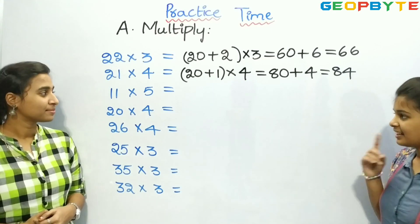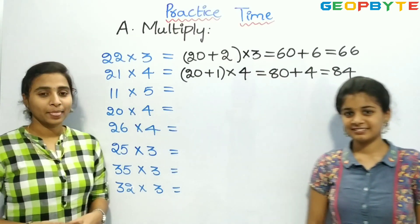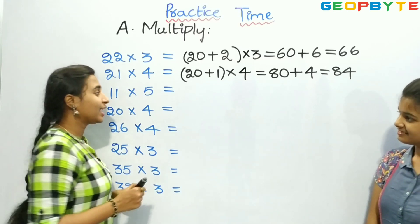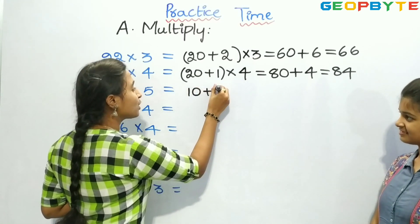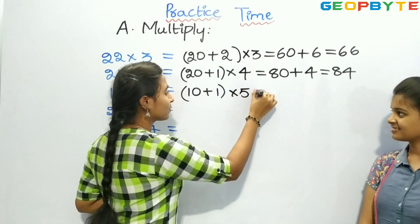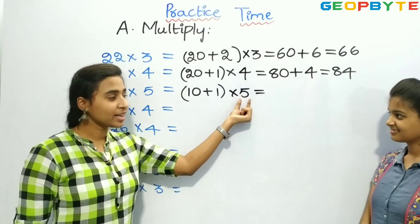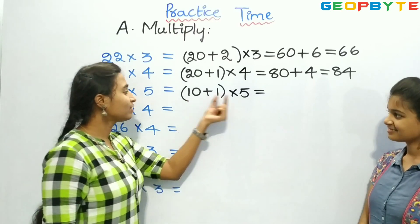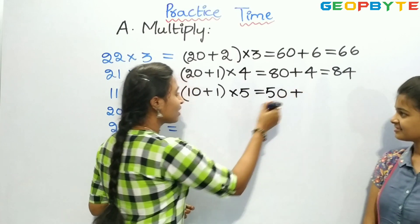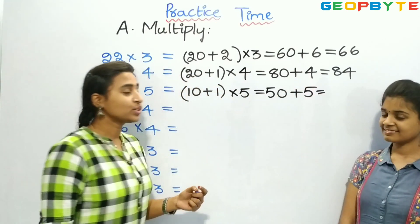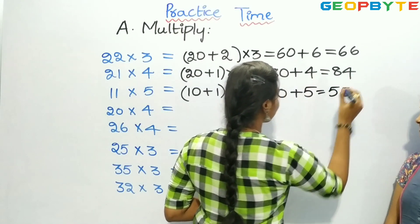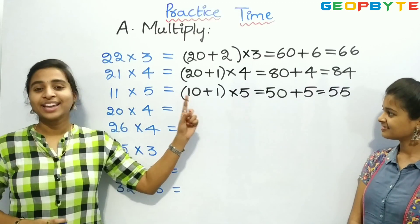Now let us see the next one: 11 into 5. Children, 11 is the bigger number. So let us split 11 as 10 plus 1, into 5. Now let us multiply 10 with 5 plus 1 with 5. 10 into 5 is 50. In between, plus, 5 ones are 5. So 50 plus 5 is equal to 55. So 11 into 5 is equal to 55.